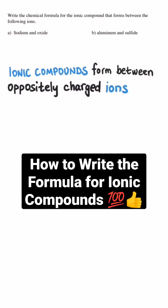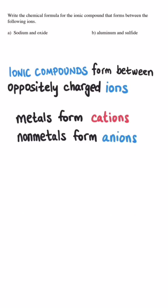Ionic compounds form between oppositely charged ions. In general, a metal forms a cation and reacts with a non-metal that forms an anion.